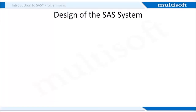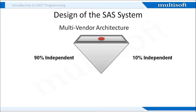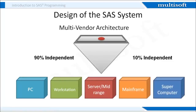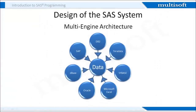SaaS has a multi-vendor architecture and can be installed on any operating system — a PC, workstation, server, mainframe, or supercomputer. SaaS is designed under the SaaS alliance agreement so that any database can connect and extract data. This includes NetEzza, DB2, Oracle, SAP, and Microsoft Excel.